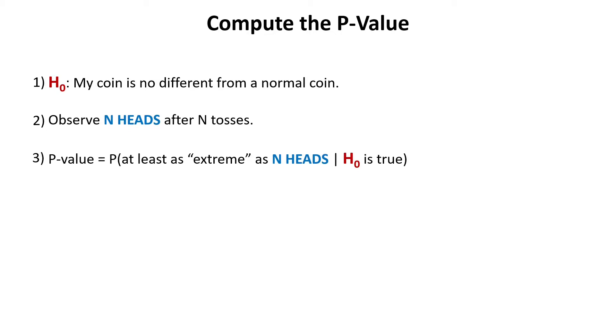And spoiler alert, if you wonder what at least as extreme means, just stick with me, we'll cover that shortly. And after we have computed the p-value, we have two cases. If the p-value is less than alpha, we reject the null hypothesis and thus we can say that we probably have a quite special coin. Or if the p-value is greater or equal to alpha, we do not reject the null hypothesis, so we cannot say with certainty that our coin is special.